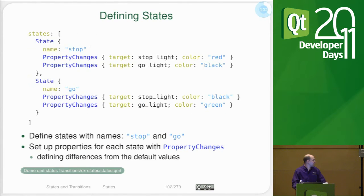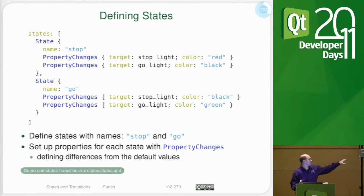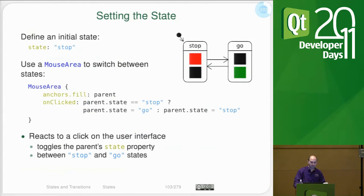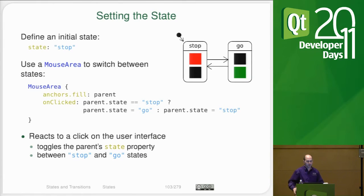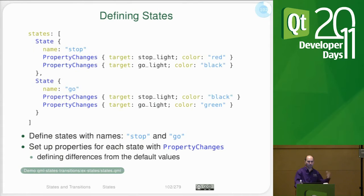There is a subtle difference here: there is the state variable that takes in a string, and there is the states variable with an s that holds the list of states as an array — which is why it has brackets at the top and bottom. We use the mouse area's on-click handler to flip the state: if the state is stop, we switch it to go; otherwise we set it to stop. So every time we click, we change states and the property changes get executed.